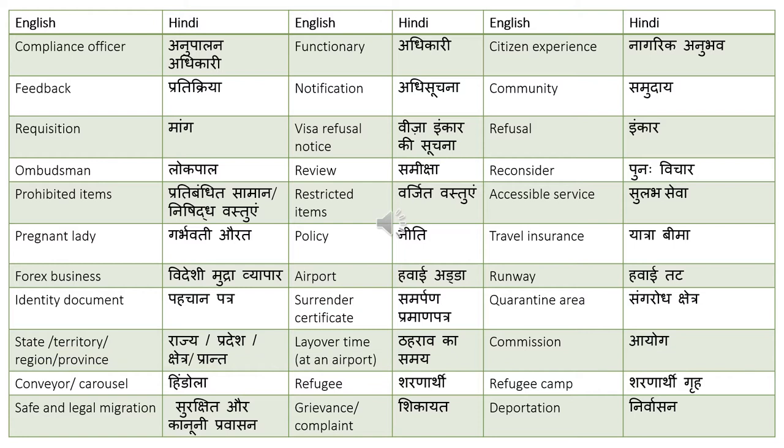State, Territory, Region, or a Province is translated as Rajya, Pradesh, Kshetra, and Pranth respectively.